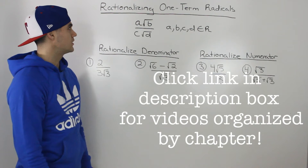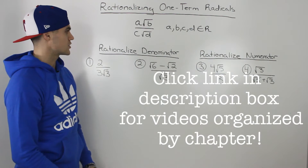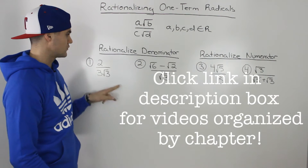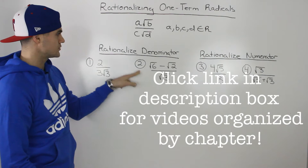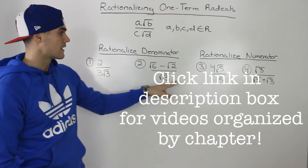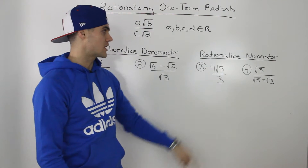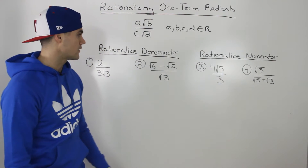In this video let's do a couple of examples for rationalizing one-term radicals. For these two examples we're going to rationalize the denominator, and then for these two we're going to rationalize the numerator.